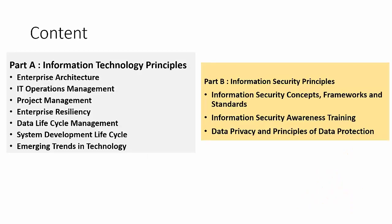Domain 4 covers two parts. Part A is called Information Technology Principles, which covers the basics of IT, enterprise operations, enterprise architecture, and related topics. The reason for adding this content is that CRISC is not only done by IT professionals — it's also done by process people or finance people. So they want to give them visibility about IT and associated risk. This part covers enterprise architecture, IT operations, project management, enterprise resiliency (BCP), data lifecycle management including privacy, SDLC phases, and emerging trends like AI and blockchain.